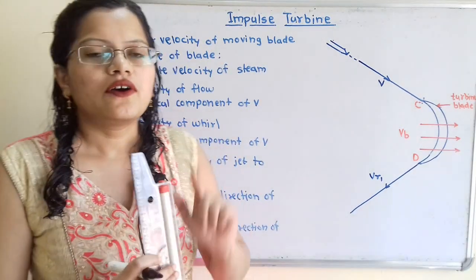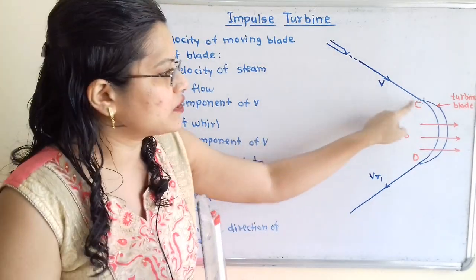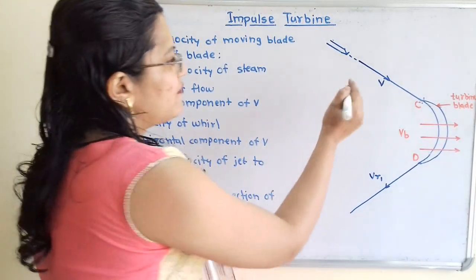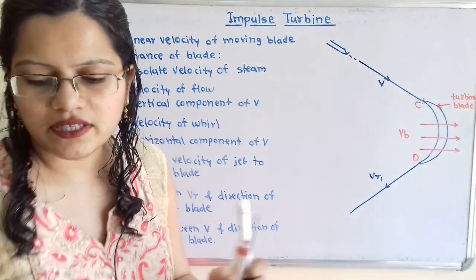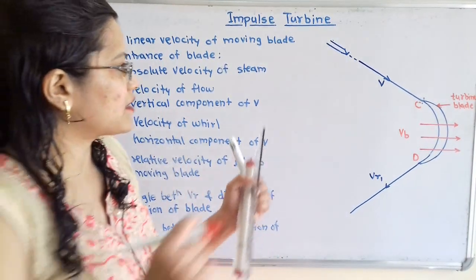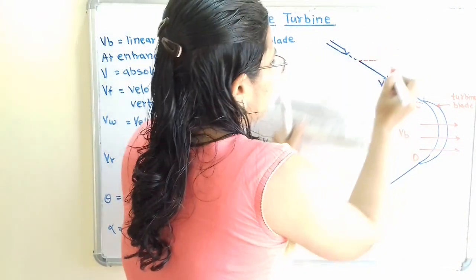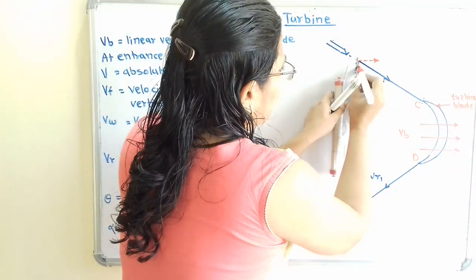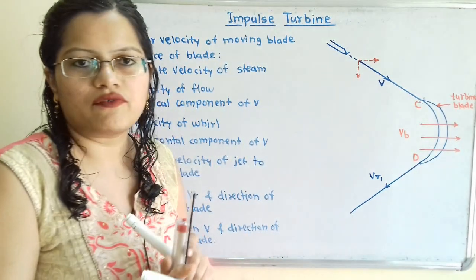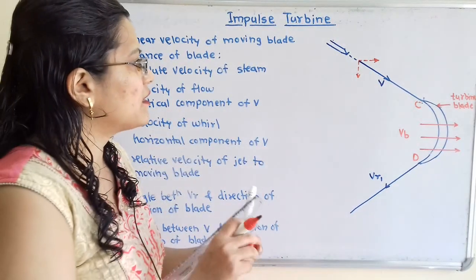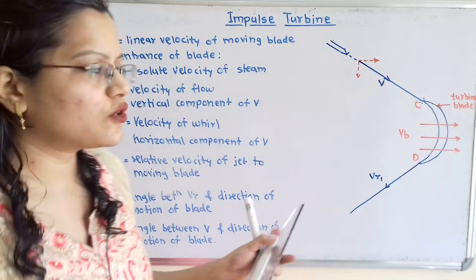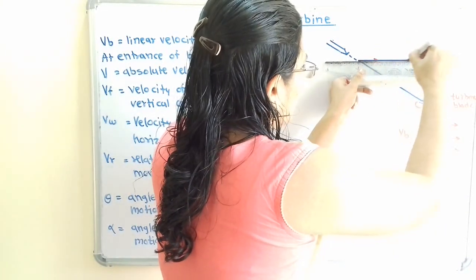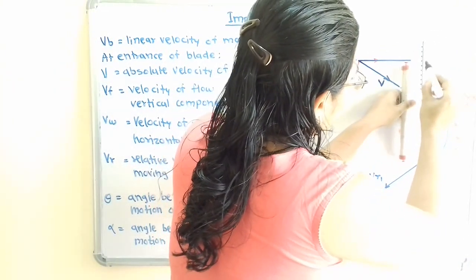We will draw one horizontal component and one vertical component for V, since V is in the inclined direction. The horizontal component direction is towards the right-hand side for this V. The vertical component direction is downward. Instead of drawing them simultaneously, we will draw one after the other — first the horizontal component, then the vertical component.